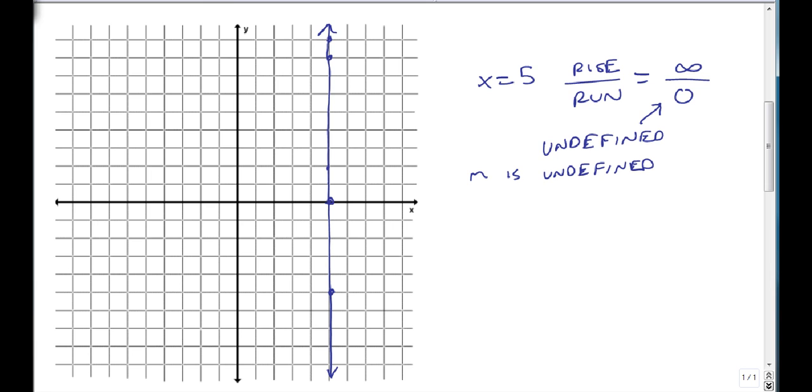On the other hand, if we let y equal negative 3, then we sit here at our negative 3 line going straight left or right. Again, we have rise over run.